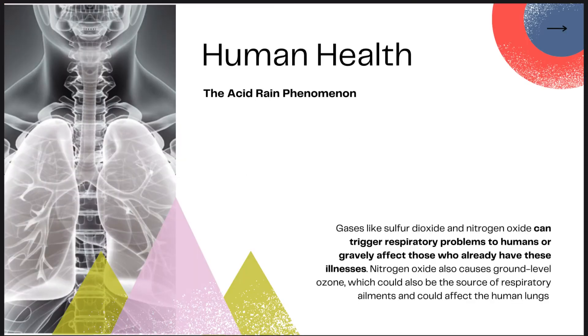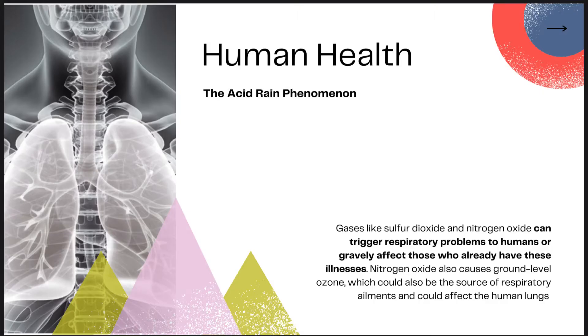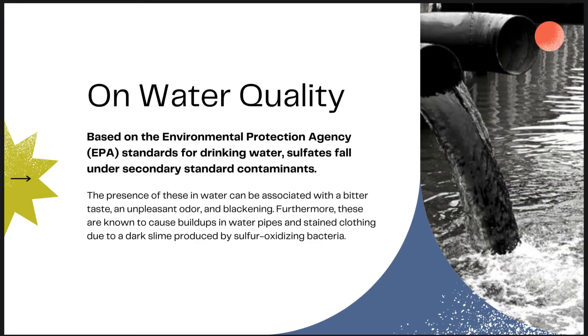The aspect of human health is also affected by sulfur in the atmosphere, mainly from the acid rain phenomenon. Gases like sulfur dioxide and nitrogen oxide can trigger respiratory problems in humans, or gravely affect those who already have these illnesses. Nitrogen oxide also causes ground-level ozone, which could be the source of respiratory ailments and could affect the human lungs.